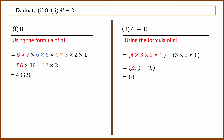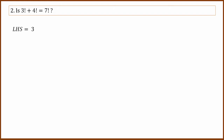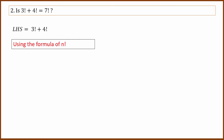Here is the next question: is 3 factorial plus 4 factorial equal to 7 factorial? First, the left-hand side: 3 factorial plus 4 factorial. The formula for n factorial is used. 3 factorial is 3 multiplied by 2 multiplied by 1. 4 factorial is 4 factorial. So solving: 6 plus 24 equals 30. Left-hand side is 30.